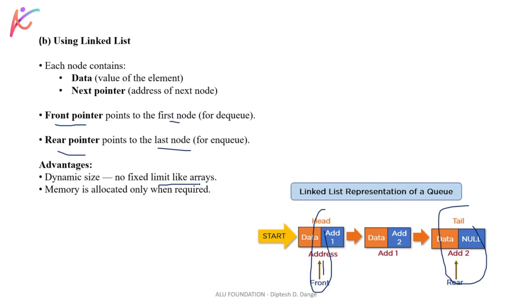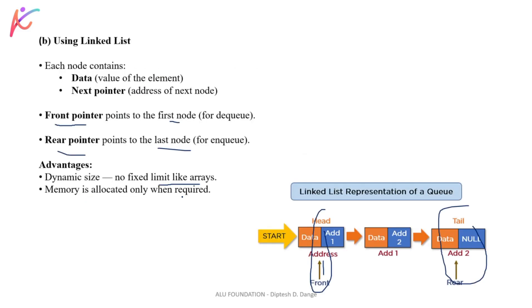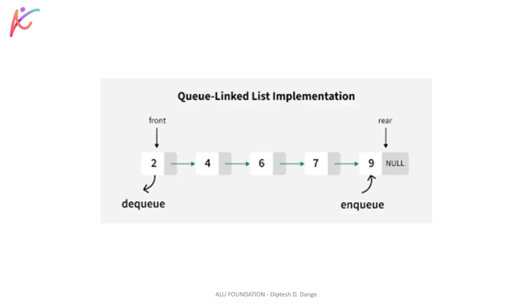In a linked list, memory is allocated only when required. When you add a new element, just insert it at the rear. In arrays you must fix the size in advance, and remaining blocks stay empty, wasting space. In a linked list queue: first element is at the front, last element is at the rear with null in the next pointer. Insertion is enqueue at the rear end, removal is dequeue at the front end.